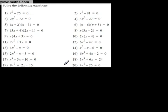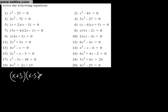Now let's look at the difference of two squares. If we were asked to factor x² - 25, we would have (x + 5)(x - 5). This number is a square number, this number is a square number, and there's a negative between them — that's the difference of two squares. So x = -5 or x = +5, as we saw earlier.